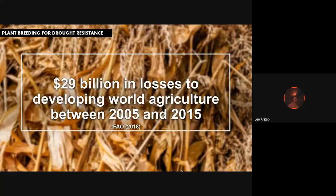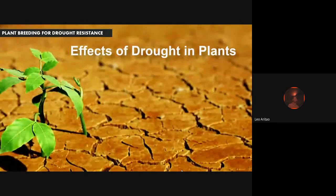According to the Food and Agriculture Organization, drought accumulates $29 billion in losses to the developing world in agriculture between 2005 and 2015. It is a permanent constraint to agricultural development in developing countries and is probably the single most common and severe stress that subsistence farmers face. It also ranks third among environmental phenomena associated with billion-dollar weather disasters, just behind tropical cyclones and severe storms.